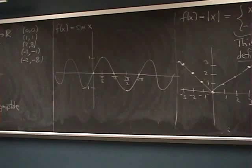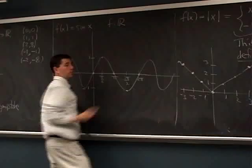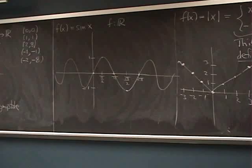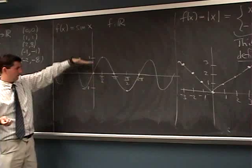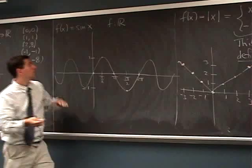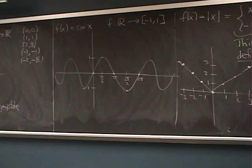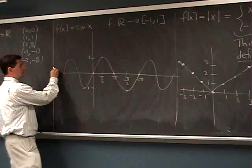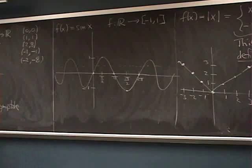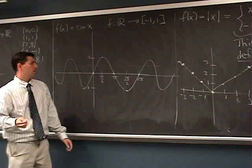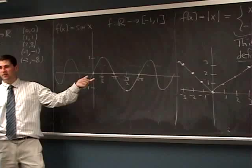Sine can eat any real number and the output is always between −1 and 1. If we want to make it onto, we can send it to the interval [−1, 1]. Is it one-to-one? No — drawing horizontal lines, each one hits the graph infinitely many times. We'll talk maybe tomorrow about how to turn this into a one-to-one function by restricting the domain further, so you can get an inverse — usually called arcsine.